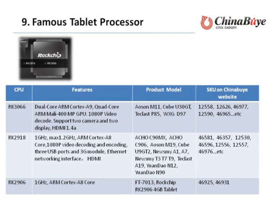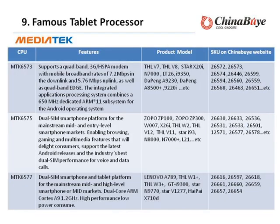Next is the ZogChip processor. ZogChip also has its own dual-core ARM Cortex. The MediaTek MT6577 is the newest processor, designed for the mainstream mid- and high-level smartphone or MID market. Dual-core ARM Cortex-A9, 1.2GHz, high-performance, low-power consumption. Products using it include Lenovo 8789, THL-W1, THL-W3, I-Pi N9, N9-770, V1277, IPI, and X710D.